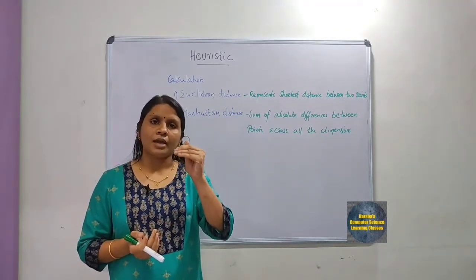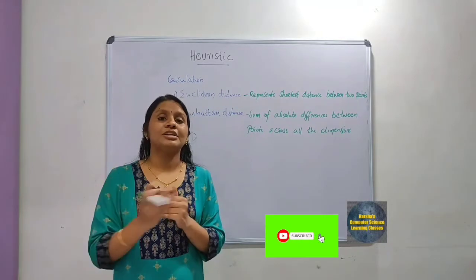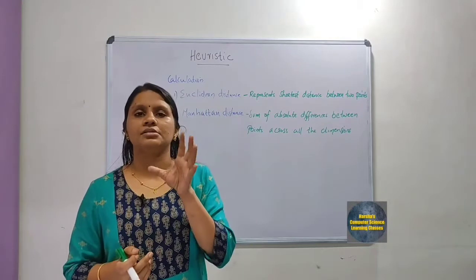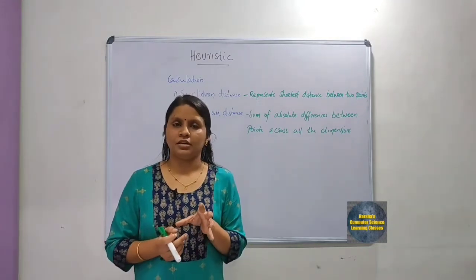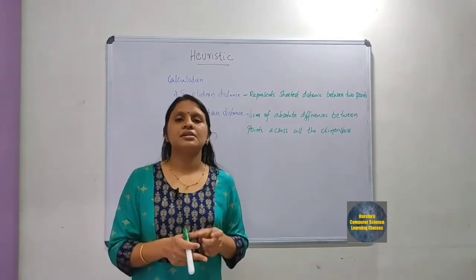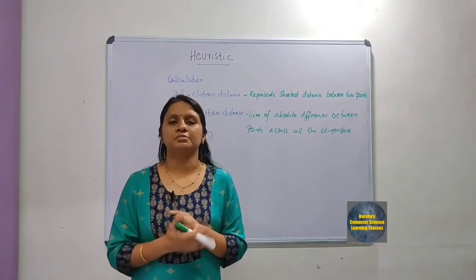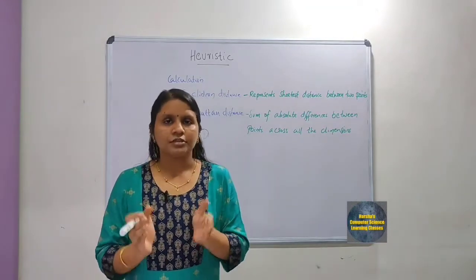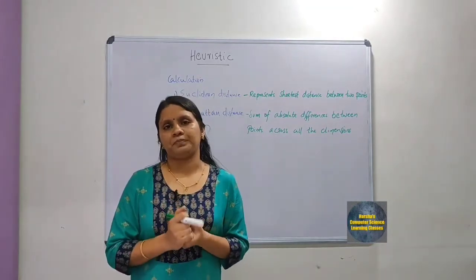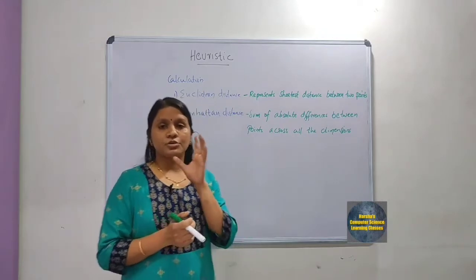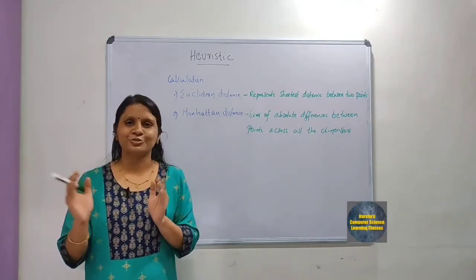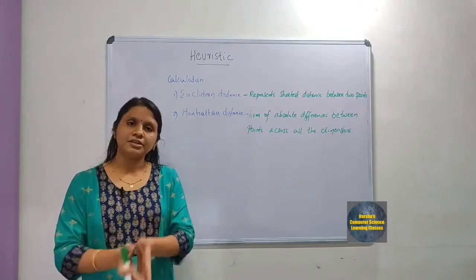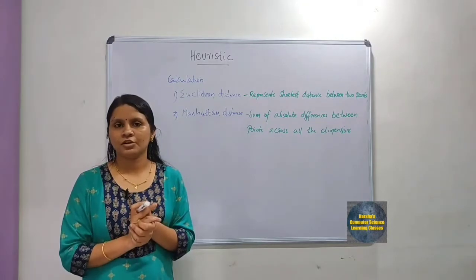The reason heuristics are used in artificial intelligence is that we need to get a good solution in a reasonable amount of time. That is achieved by using heuristic methods. However, heuristic methods do not guarantee an optimal solution — they guarantee a good solution, but not necessarily the optimal one.